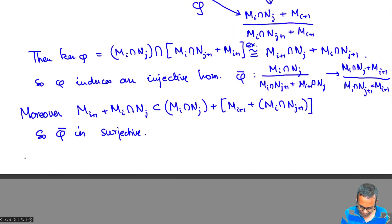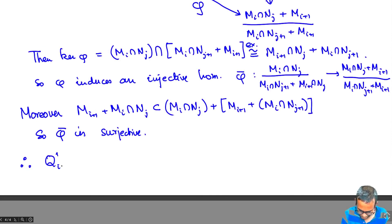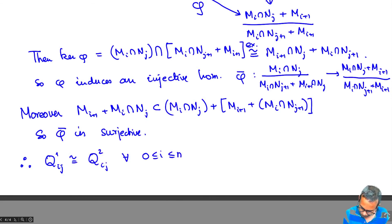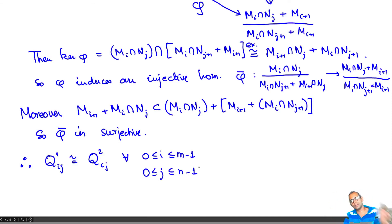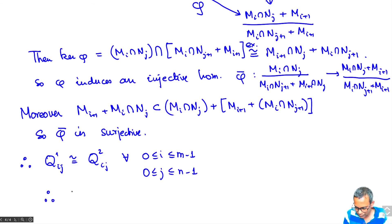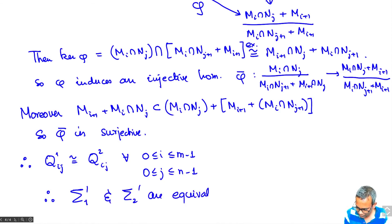So we have Q1_{ij} isomorphic to Q2_{ij} for all i ≤ M-1 and j ≤ N-1. The remaining quotients are just 0, since the last module in each row equals the first module of the next. Therefore sigma_1 prime and sigma_2 prime are equivalent, completing the proof of Schreier's theorem.